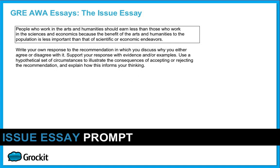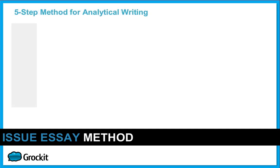Here is a sample prompt. We mentioned we're going to look at the second option — write your own response to the recommendation. The statement reads: 'People who work in the arts and humanities should earn less than those who work in the sciences and economics, because the benefit of the arts and humanities to the population is less important than that of scientific or economic endeavors.' The first step is to take apart the issue or argument and figure out what's happening, so that before deciding which side to argue, you actually understand what the recommendation means and how to interpret it.